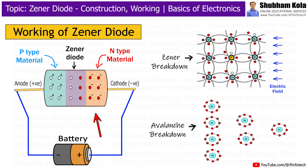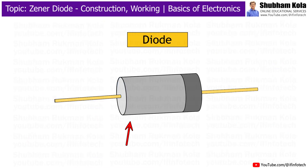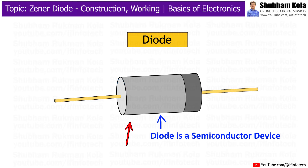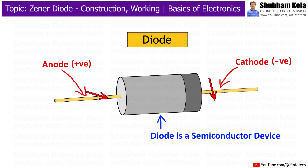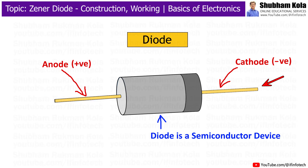Before we dive into Zener diodes, let's first recall what a diode is. A diode is a semiconductor device that allows current to flow in one direction only. It has two terminals, the anode and cathode. The anode is the positive side and the cathode is the negative side.